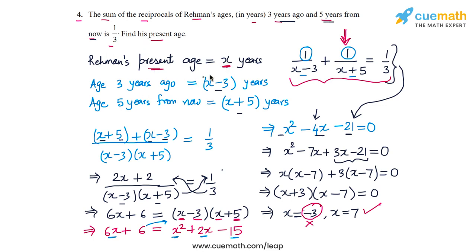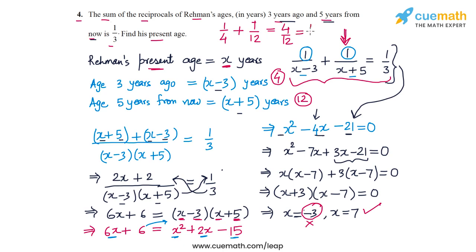Let's verify: Rehman's age 3 years ago would have been 7 - 3 = 4 years, and his age 5 years from now would be 7 + 5 = 12 years. The reciprocals are 1/4 and 1/12, and their sum is 3/12 + 1/12 = 4/12 = 1/3, which matches the problem. So x = 7 is correct — Rehman's present age is 7 years.